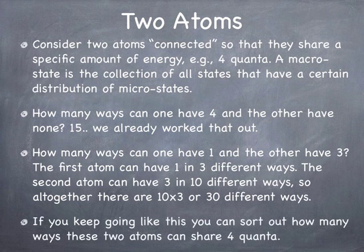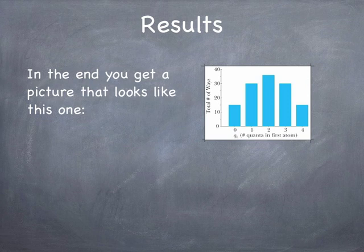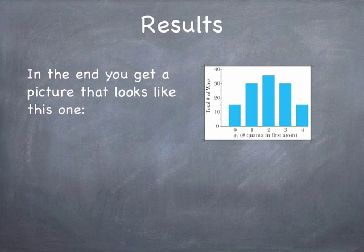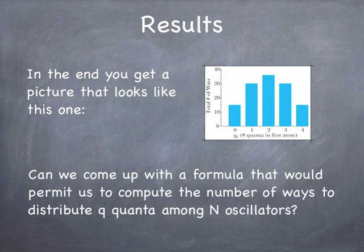How many ways can one atom have one quanta and the other have three? One quanta can be distributed in three ways (x, y, or z), and there are ten ways to distribute three quanta among three oscillators — so altogether 30 ways. You multiply the number of ways for each atom to get the total. Continuing this analysis, the distribution turns out to be symmetric, and the most likely situation is that they each have two quanta, since that has the greatest number of microstates.